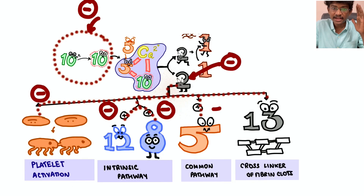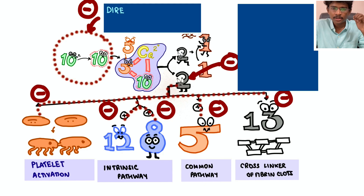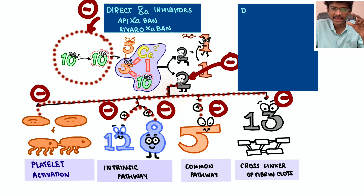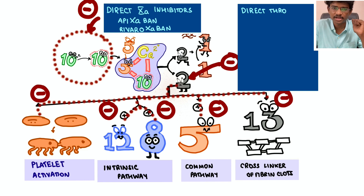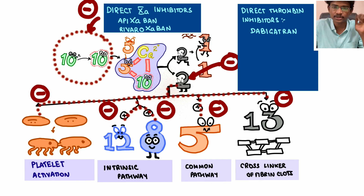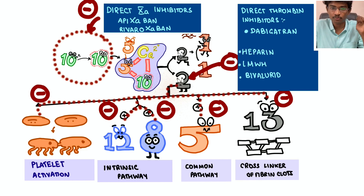Looking at drug categories: factor 10a inhibitors like rivaroxaban and apixaban — the 'xa' in their names means they inhibit factor Xa, thus indirectly inhibiting thrombin formation. Then there are direct thrombin inhibitors like dabigatran — 'tr' for thrombin, 'an' for antagonist. And then there are the heparins — unfractionated heparin and low molecular weight heparins — which we'll see in detail.